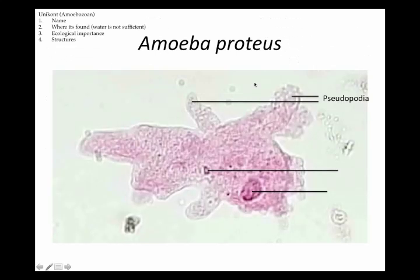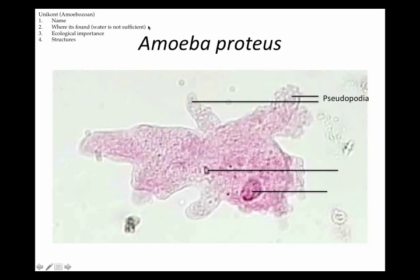Let's look at Amoeba proteus first. It is a unicont, which means it's in the same supergroup as animals. It's an amoebazoan, so it's on a different branch. It's found in fresh water, and we're going to focus on its structures.